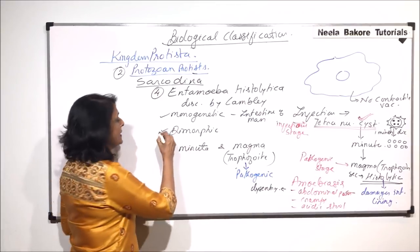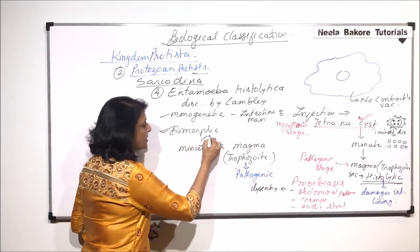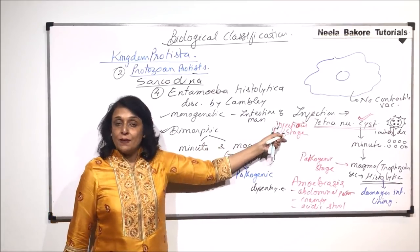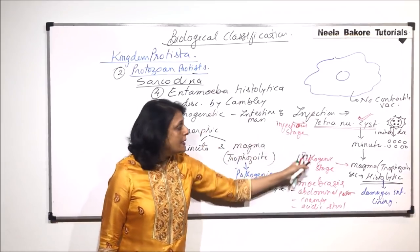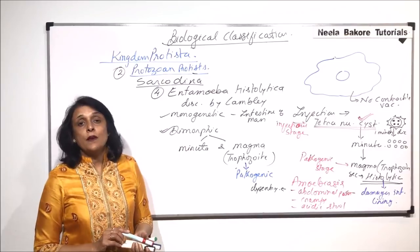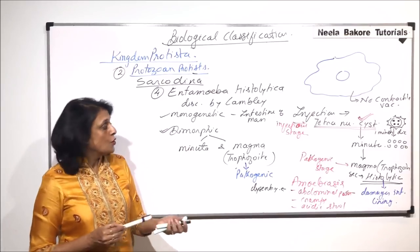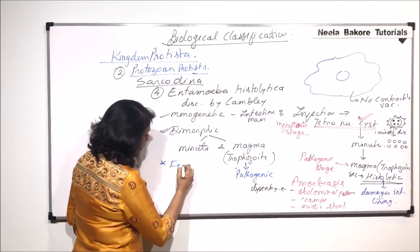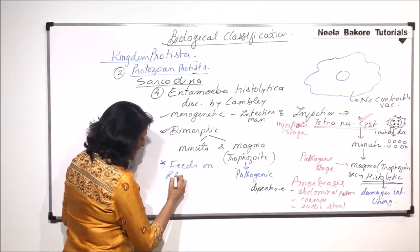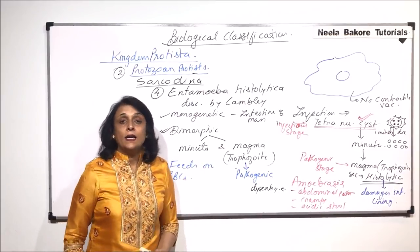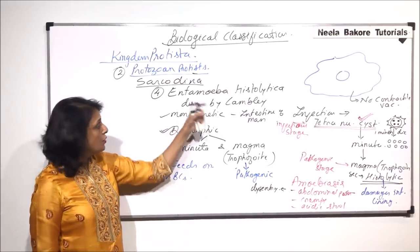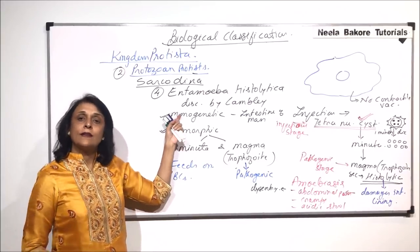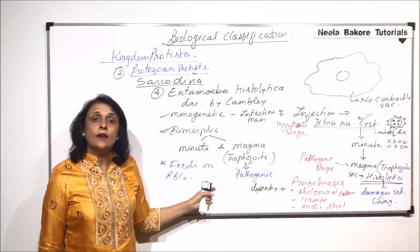To summarize, Entamoeba histolytica is dimorphic with minuta and magma stages. Infection reaches us through contaminated food and water in the form of cysts. Entamoeba feeds on RBCs. It is monogenetic — only one host is required, that is the human — and it is found in the intestine.